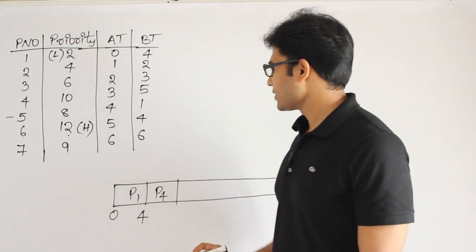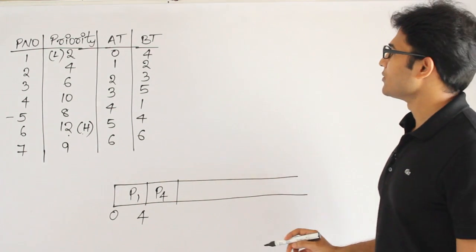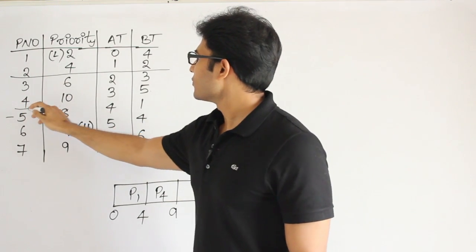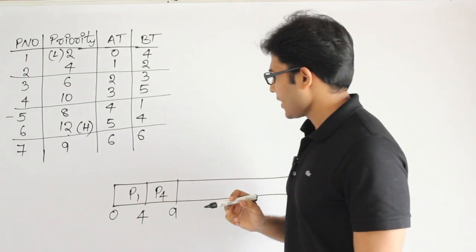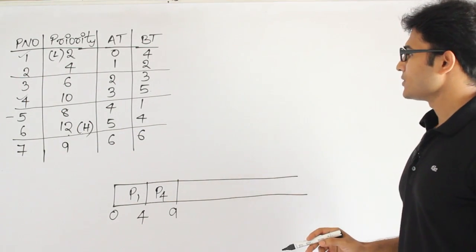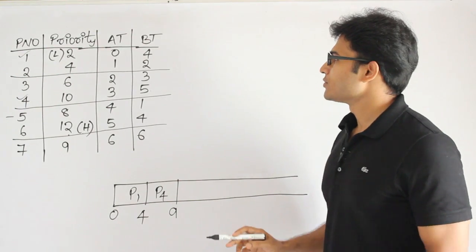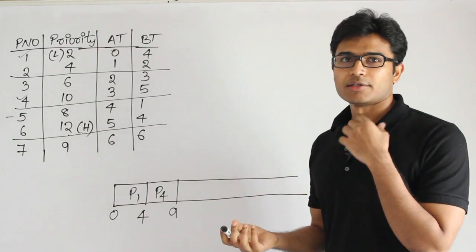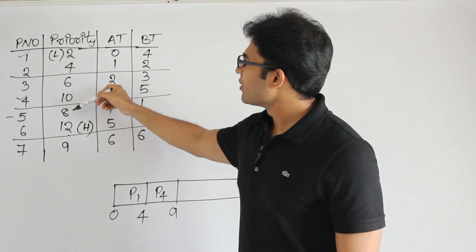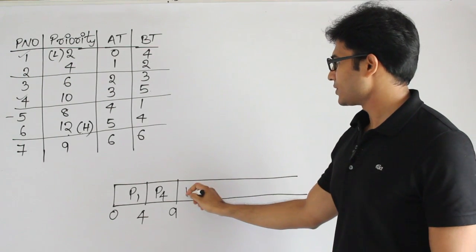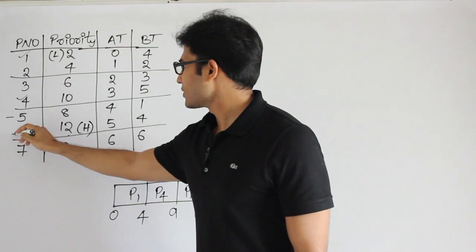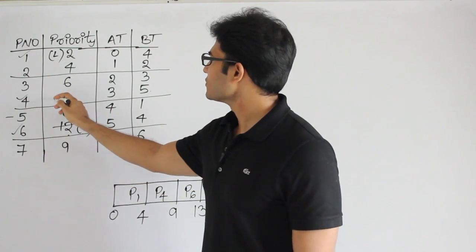P4 has the highest priority and its burst time is 5, so it runs from time 4 to time 9. Now P1 and P4 are completed. At time 9, all remaining processes are available. Looking at the remaining priorities — 4, 6, 8, 12, and 9 — obviously 12 is the highest priority, which is P6. So the next process is P6, with burst time 4, finishing at time 13.